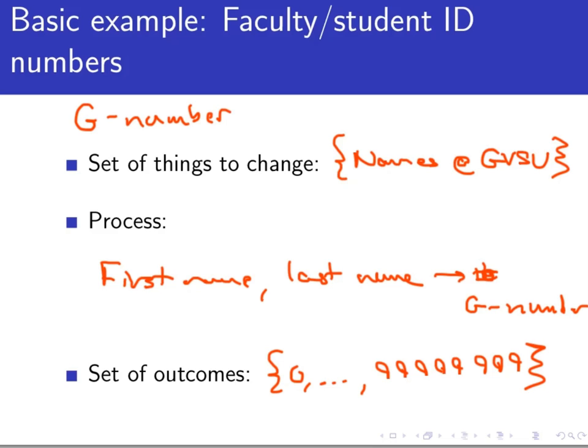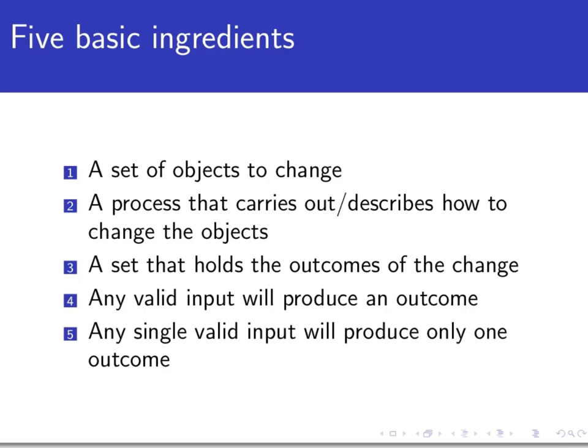So now we're ready to formally define what a function is, and we'll do that in the next video. But for now, let's take away the things that all three of these conceptual models have in common. There are five things to note. First of all, for each of these conceptual models of a function, there's a collection or a set of objects that we are putting into our process. These are the things that we wish to change. Secondly, there is a process that carries out that change, or at least describes how we are supposed to do it.